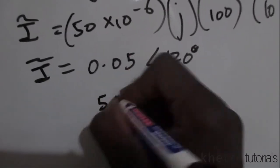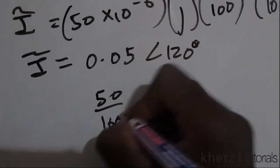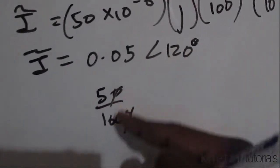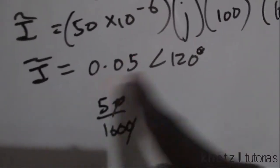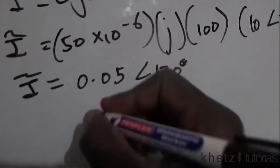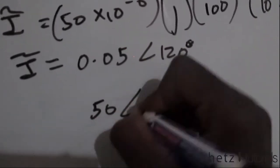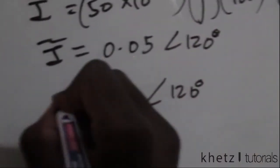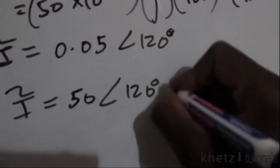50 divided by a thousand would give us something like that. So 50 divided by 100, which is of this form. The result is therefore 50 with an angle of 120 degrees milliamperes.